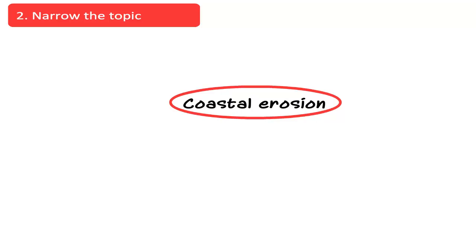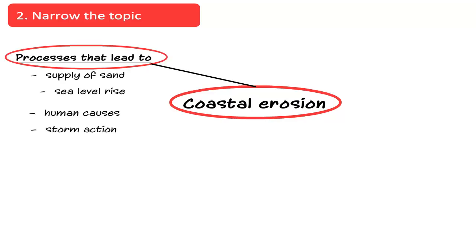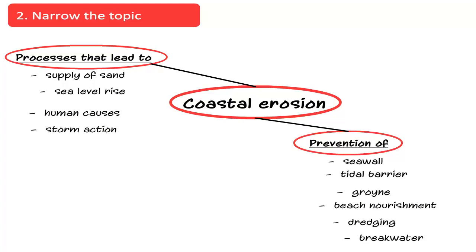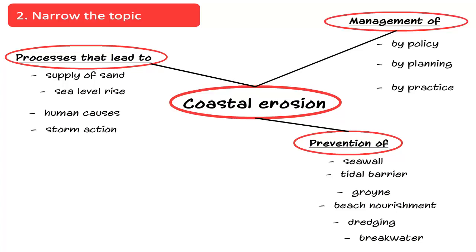But that topic was still very broad, so the next step in Jill's approach was to narrow the topic further. To do this, Jill started to write out some different aspects of the topic. From her textbook, she listed some processes that lead to coastal erosion, such as supply of sand and sea level rise. She listed some methods applied to prevent erosion, such as sea walls and tidal barriers. And she listed some management strategies implemented to deal with erosion, such as policies or planning.